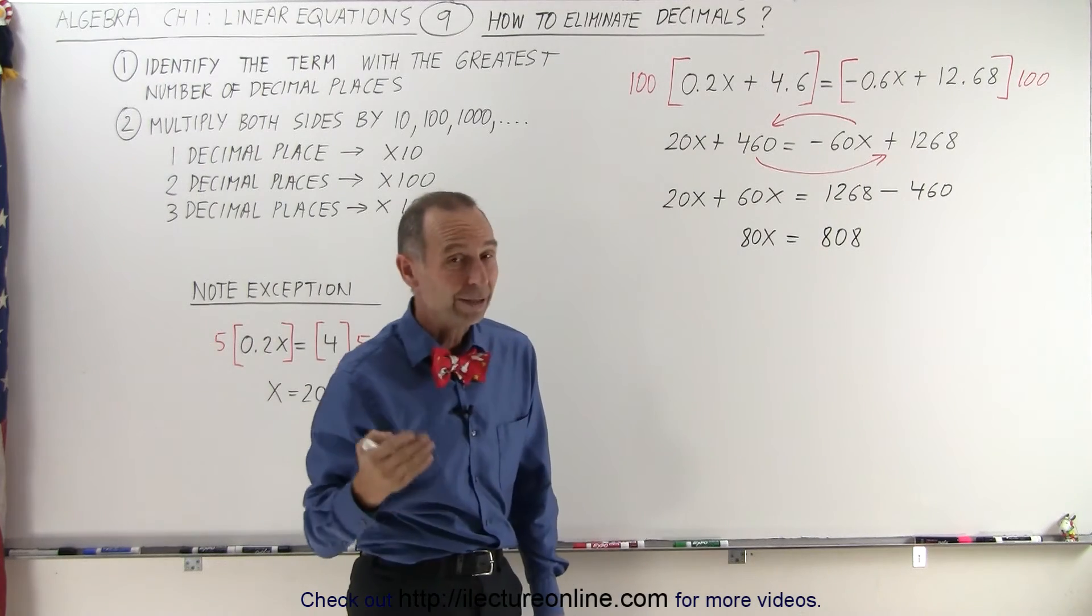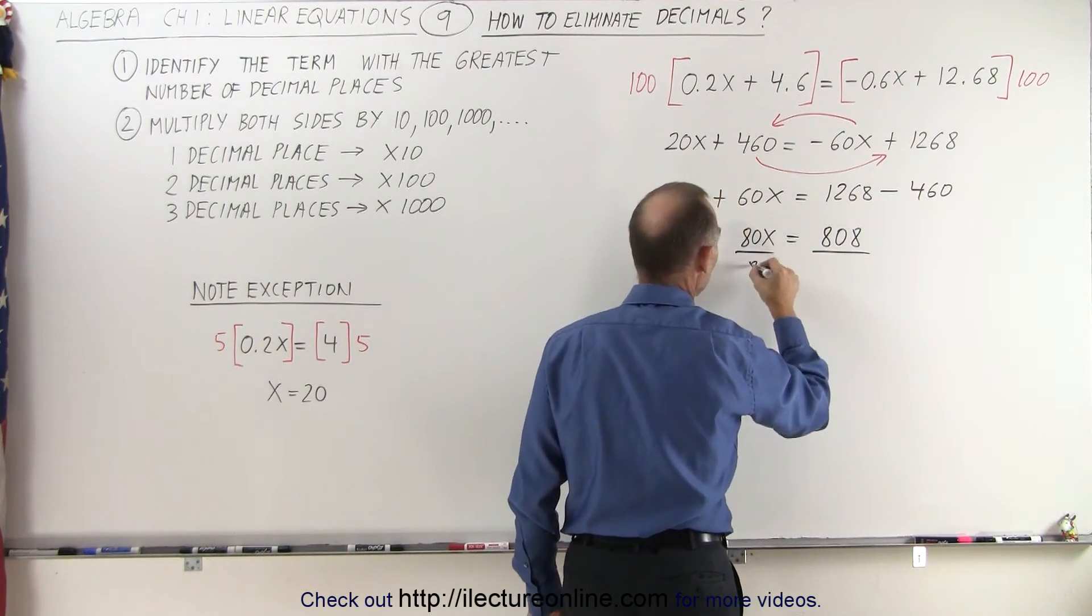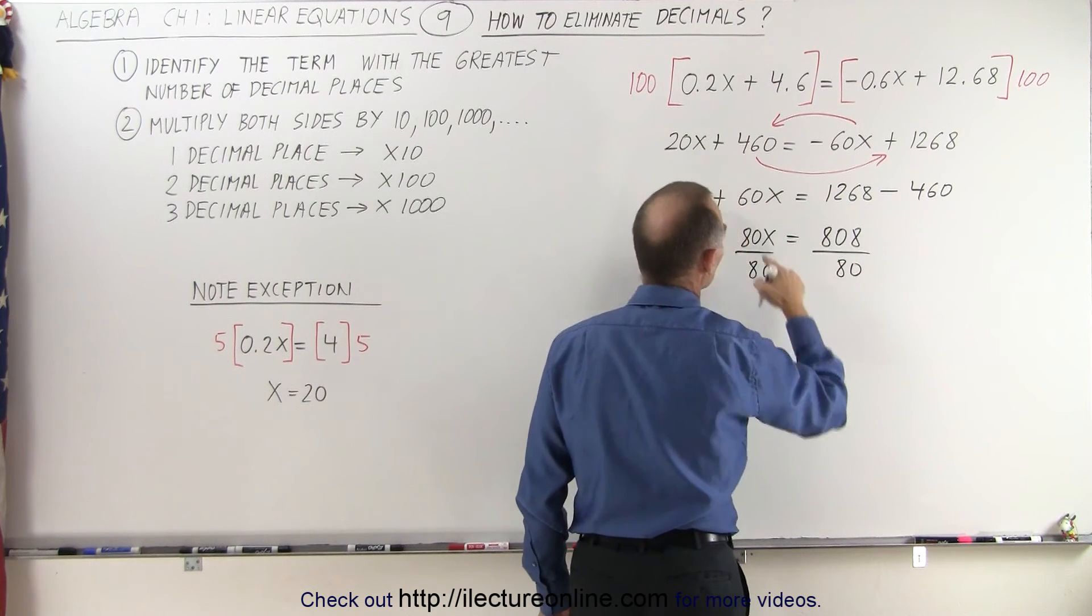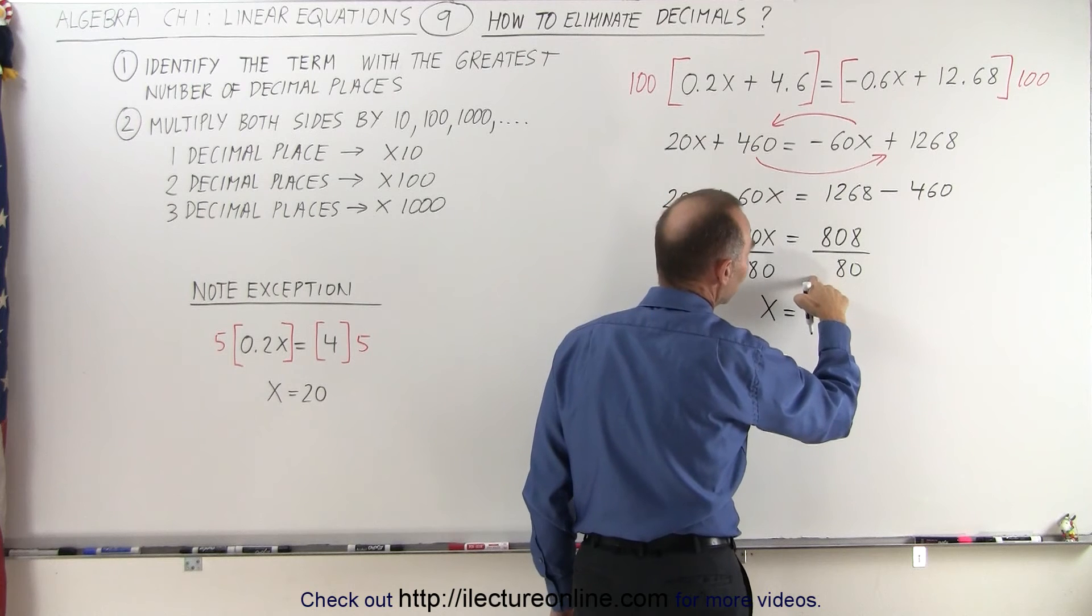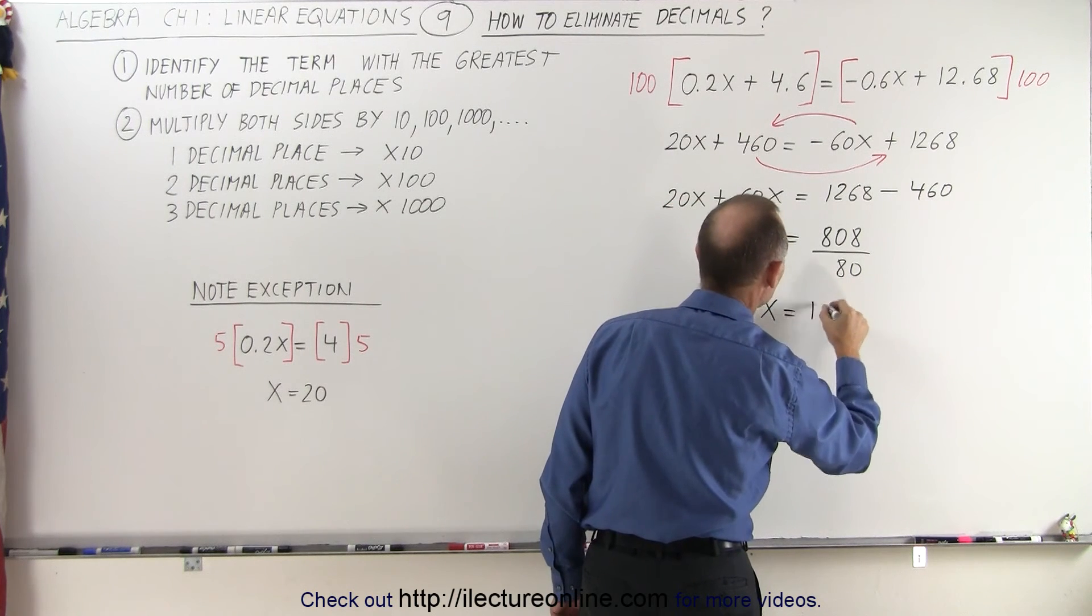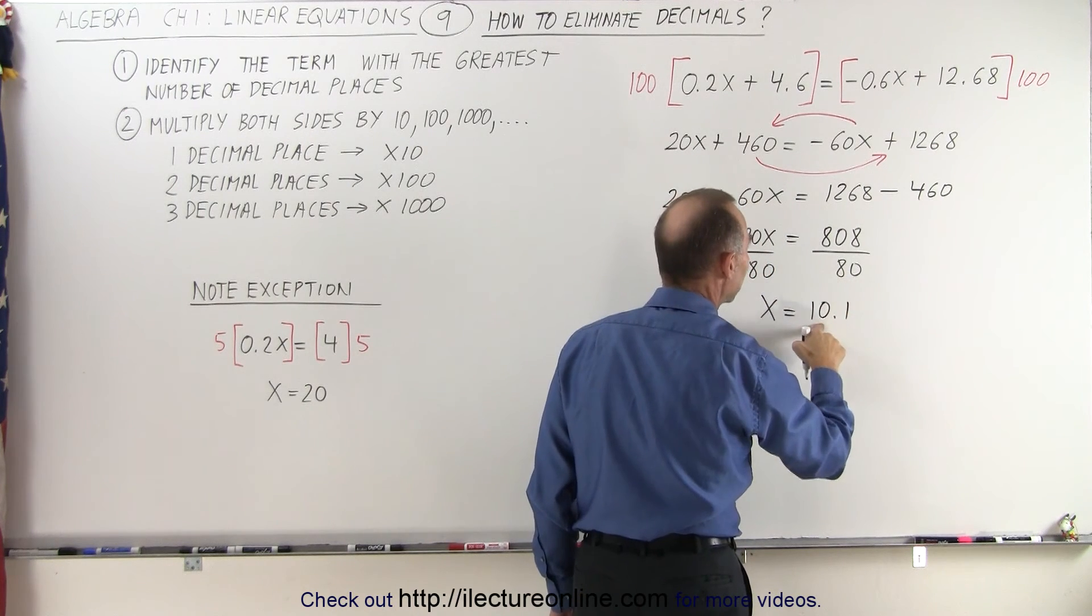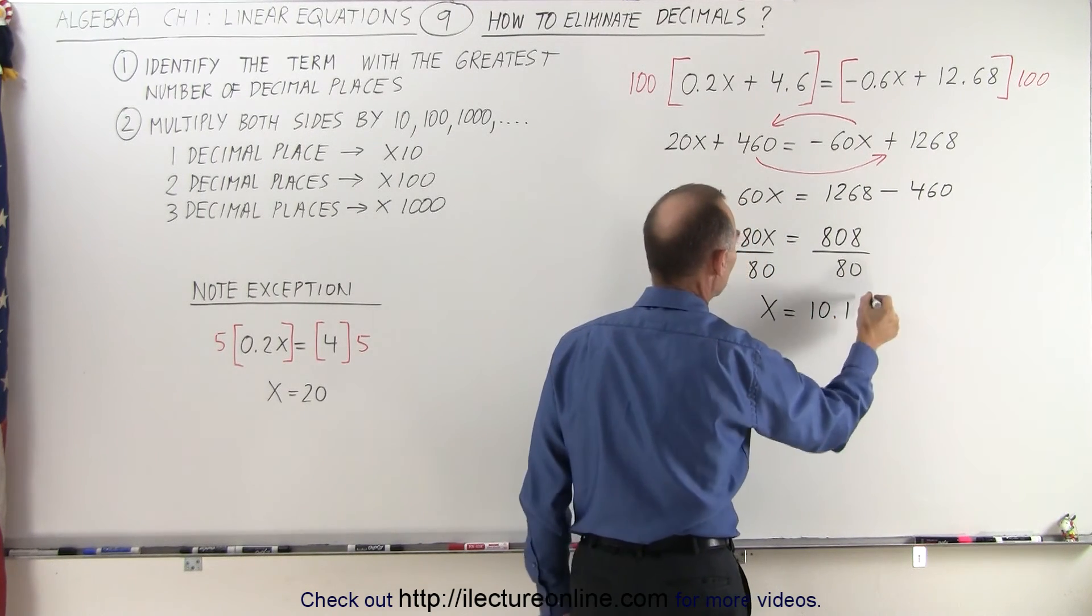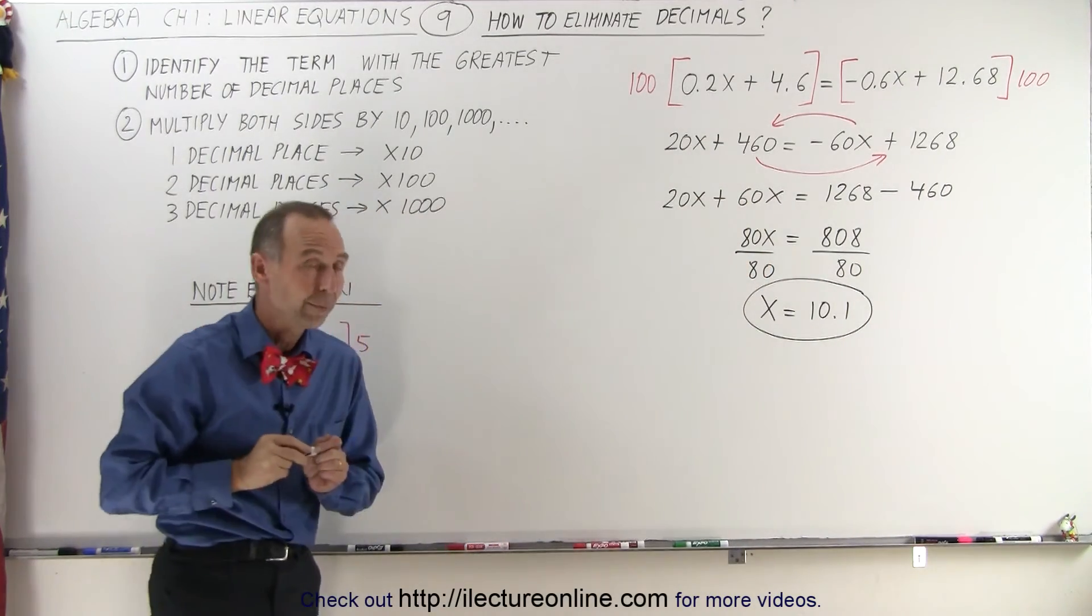And now we're going to divide both sides of the equation by the numerical coefficient of the left side, which is 80. So in this case, we end up with x equals on the left side. On the right side, we get, let's see, that would be 10.1. 10.1, because we multiply 10.1 times 80. We get 800, we get plus 8. Yeah, that would be correct. And so the final solution is x equals 10.1.